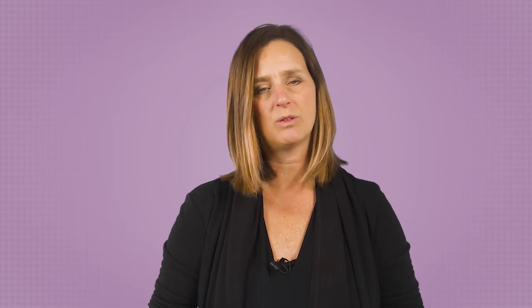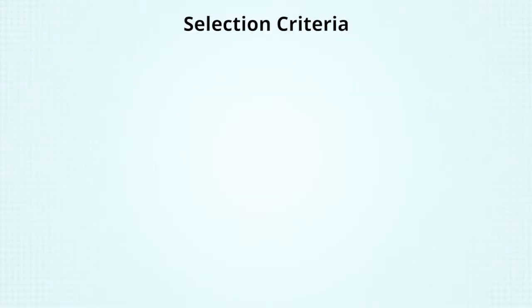So what do we mean by selection criteria? These are the things that are important to us as an organization or as a portfolio. They can be varied, but most criteria are categorized as follows. One, mandatory: projects and/or programs that must be done due to regulations, risk events, or necessary technological changes.